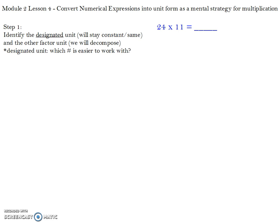Usually when you're trying to decide which number to designate as the designated unit, you want to ask yourself which number is easier to work with. It really doesn't matter which one you choose, you just need to make sure that whichever one you choose, you can work with it and you keep it the same. For me, I'm going to choose 24 as my designated unit. The reason I chose that is it's easy for me to decompose 11 and break it down into 10s. But you could also choose 11, just make sure that you stay with the number that you chose.